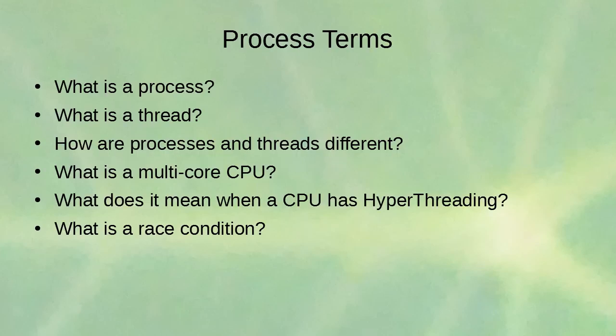Processes and resources: what is a process, what is a thread, how are processes and threads different? A process is basically a program. What happens in the CPU is there is a program counter and some memory, so the program gets loaded into memory and then the program counter tells the CPU which part of that memory it is looking at — which operation it is going to do next.